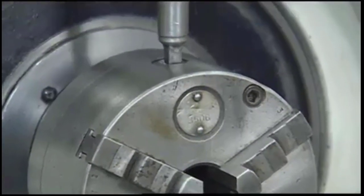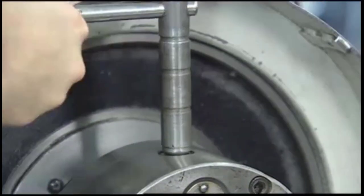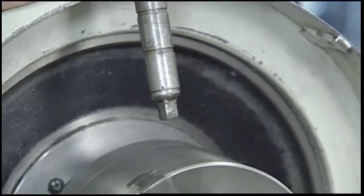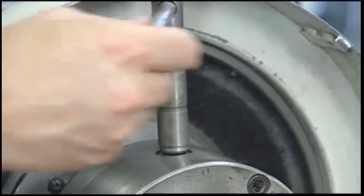The jaws of a three-jaw universal chuck move simultaneously and can be opened or closed by turning any of the three sockets with a chuck wrench.